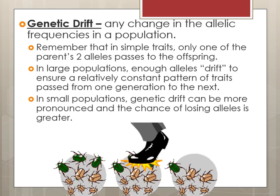Genetic drift is essentially the change in which alleles are frequent in a population versus ones that aren't. In simple traits, only one of the parents' two alleles is passed on to the offspring, but in large populations, enough alleles drift to ensure a relatively constant pattern of traits passed from one generation to the next. Think about these bugs on two different surfaces — sand versus grass. If these bugs were inhabiting sand, the ones that don't blend well will be picked off by predators, and eventually that green coloration will become less frequent because those green individuals probably won't survive to reproduce. So the tan coloration will become the primary color.